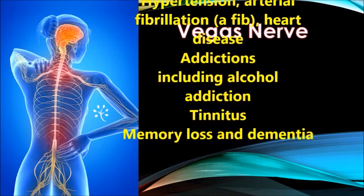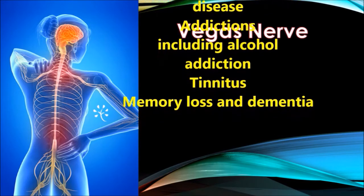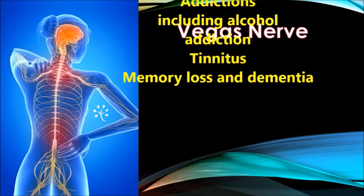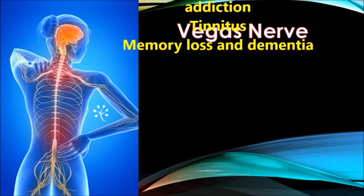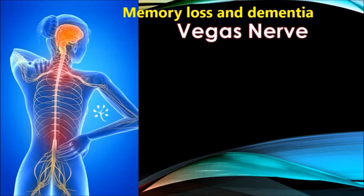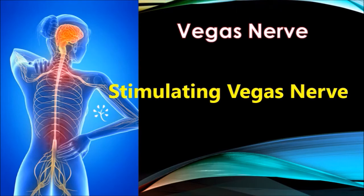Now you know that the two areas we need to work on to improve your ADHD are improving your microbiome bacteria in your body and stimulating your vagus nerve. Let's go to the exercises and see how we can help. Let's learn about some of the exercises that we can do to stimulate our vagus nerve.